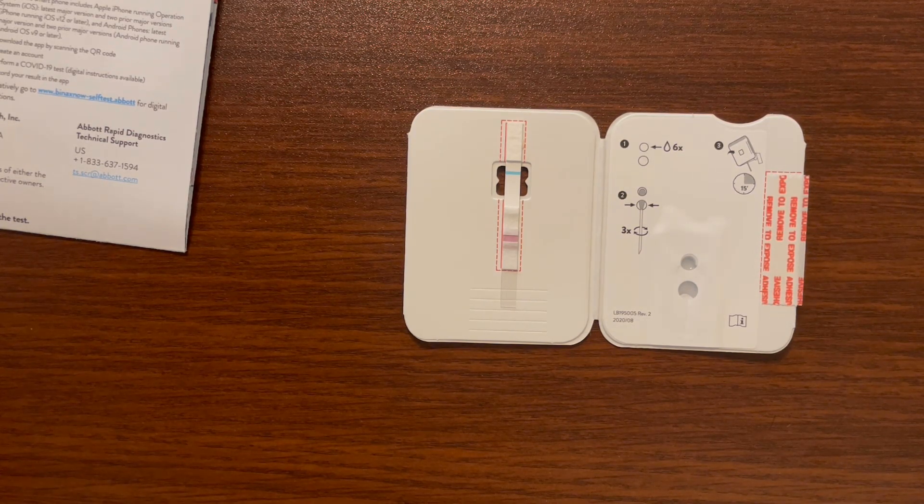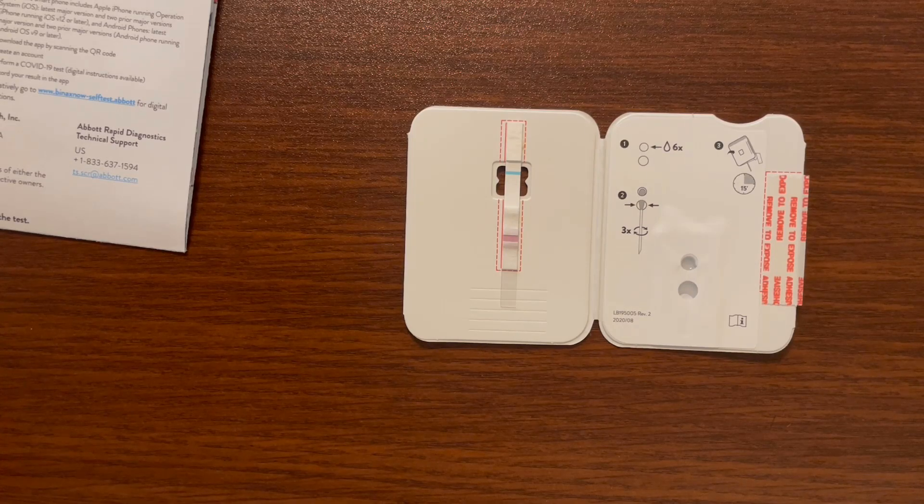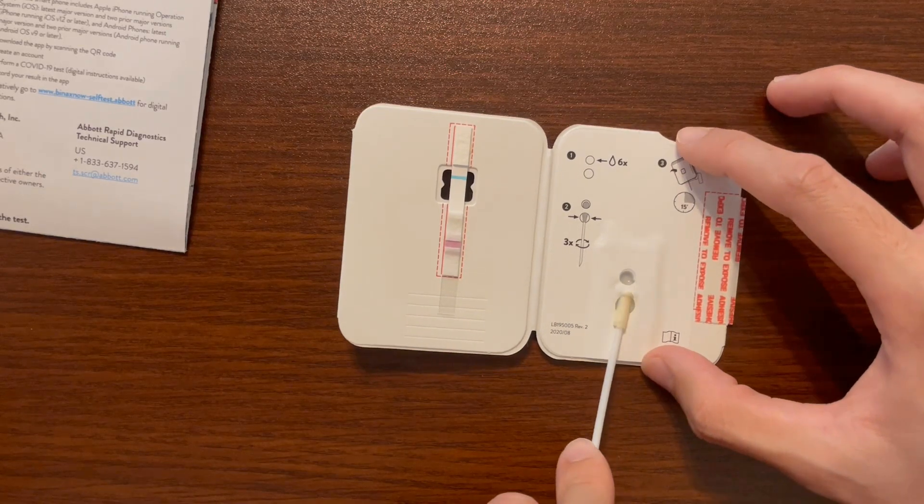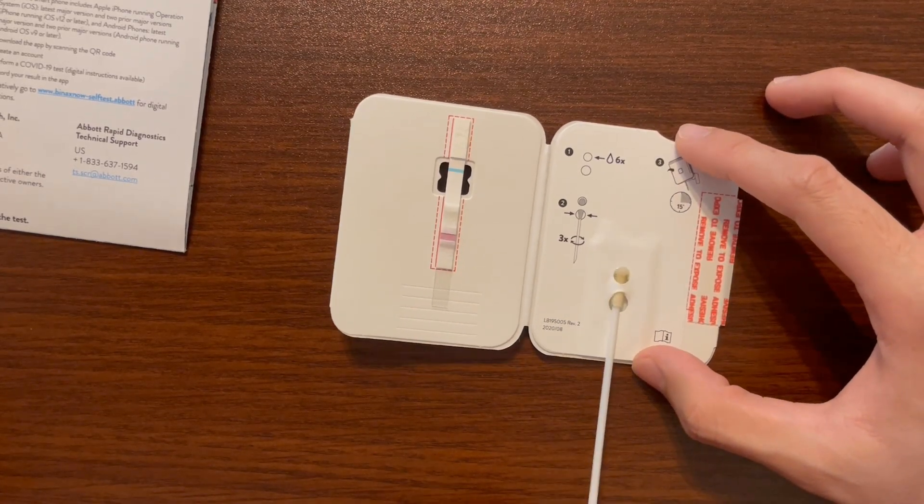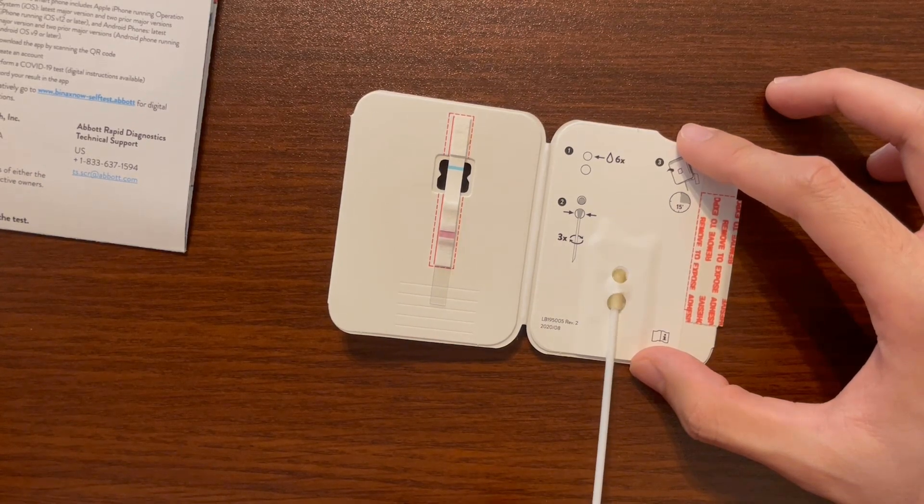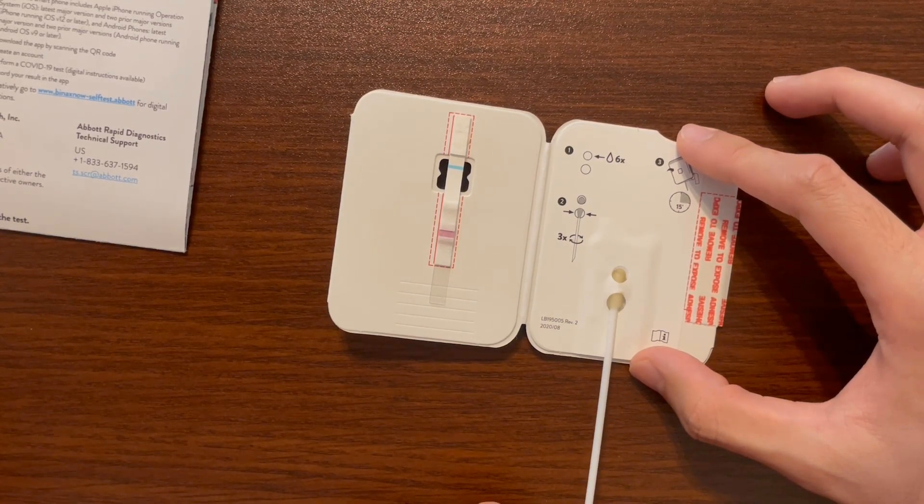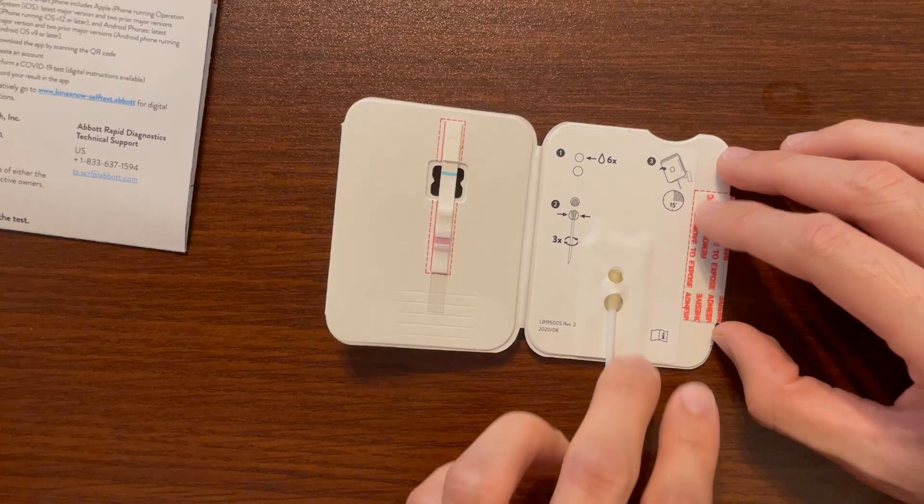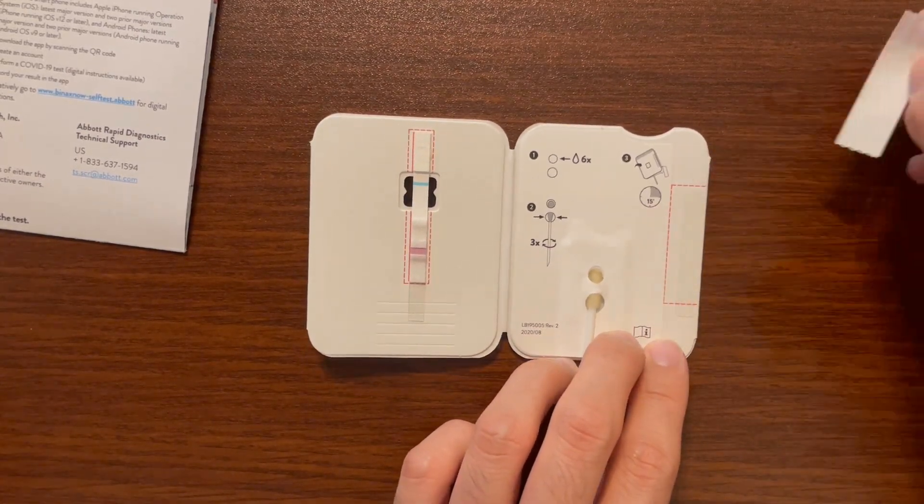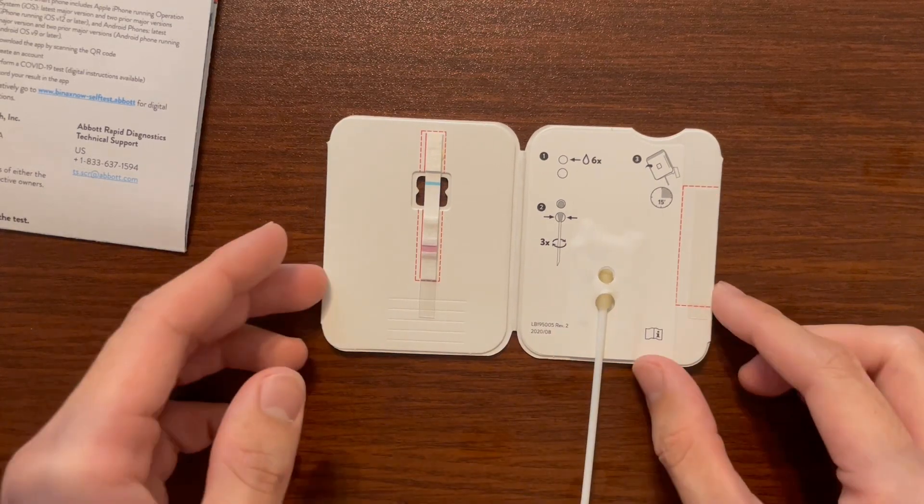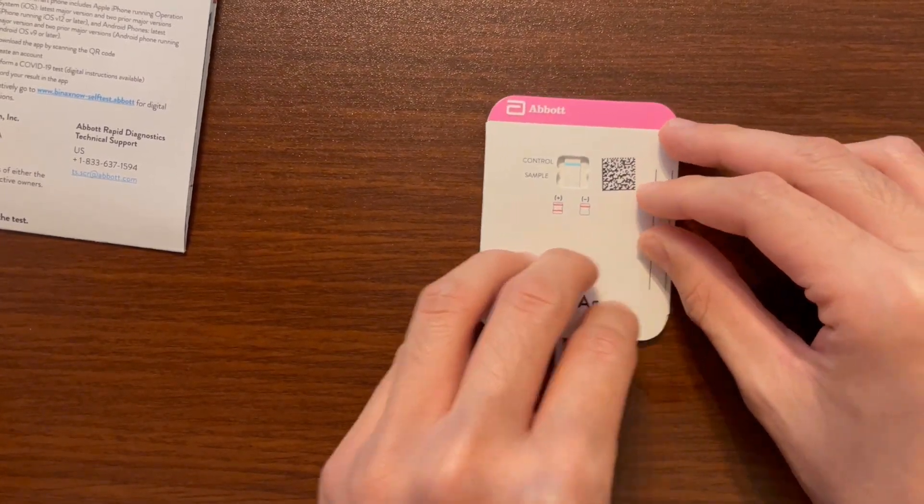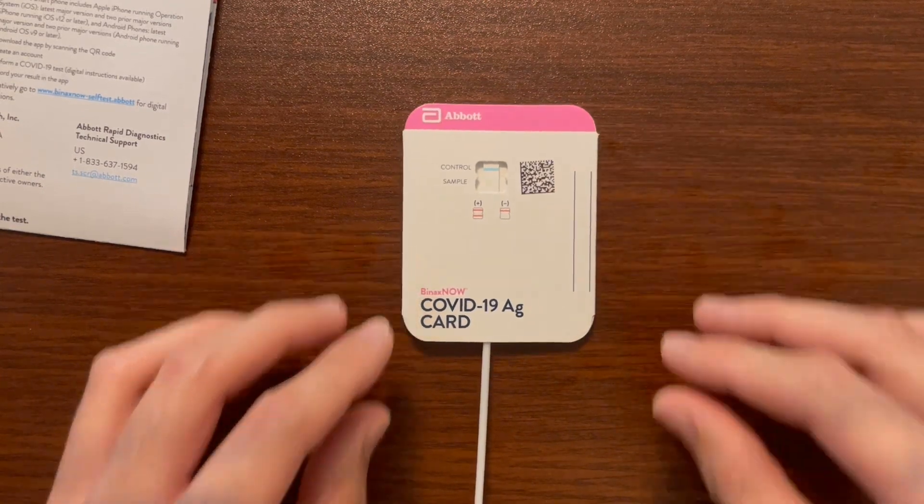Once you've done that, take the swab and insert it through the bottom hole on the test card. We're going to turn it to the right three times, so three full rotations. Keeping the swab there, remove this adhesive peel and seal the test card, making sure to press it down. That should be it.